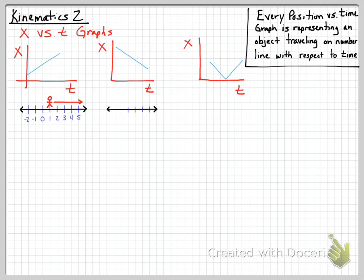The second graph uses another number line, and here I'm getting closer to the origin — starting further away and walking toward it. You can see that this has a negative slope.